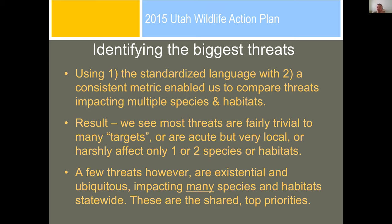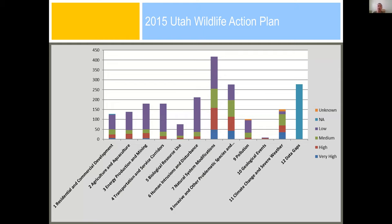In Utah, identifying the biggest threats — we used the standardized language and the metric, which enabled us to compare threats affecting multiple species and habitats. Most threats are fairly trivial: they may affect many targets but at low impact, or they can be acute but very local. A few threats, however, are both ubiquitous and existential — impacting many species and habitats statewide badly — and these are the shared top priorities.